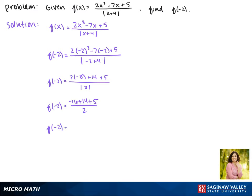So, negative 16 plus 14 is negative 2, then negative 2 plus 5 is 3, so our final answer is 3 halves.